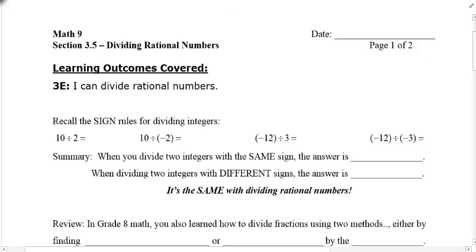How about doing these questions: 10 divided by 2, 5. 10 divided by negative 2, negative 5. Negative 12 divided by 3, negative 4. And then negative 12 divided by negative 3, positive 4.